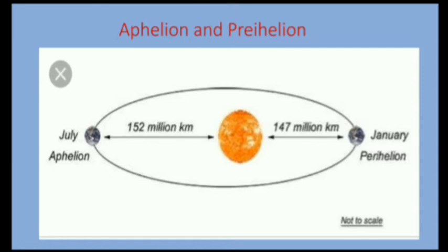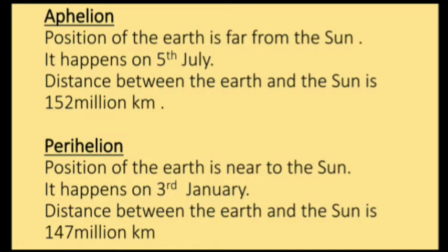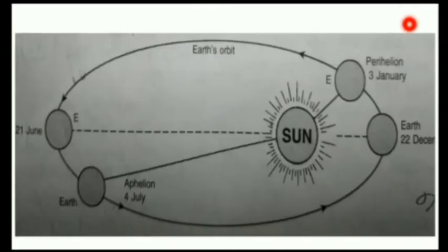Aphelion: the prefix 'aph' means away from the Sun, so at aphelion the Earth is farthest from the Sun. This happens on 5th July every year, when the distance between the Earth and the Sun is about 152 million kilometers. In perihelion, the Earth is nearest to the Sun. This happens on 3rd January, when the distance between the Earth and the Sun is about 147 million kilometers.